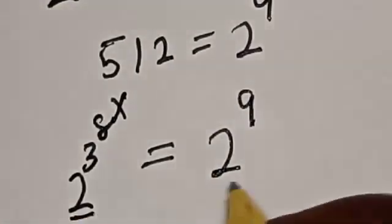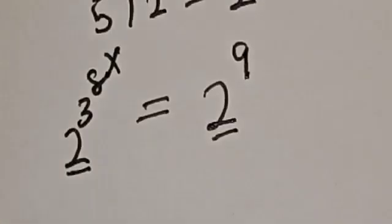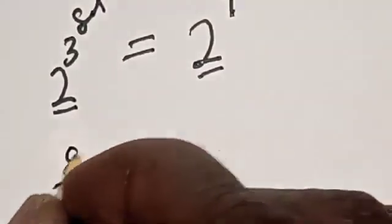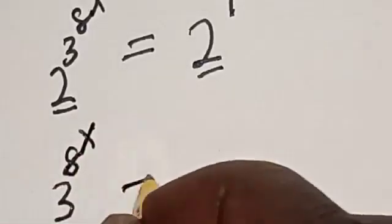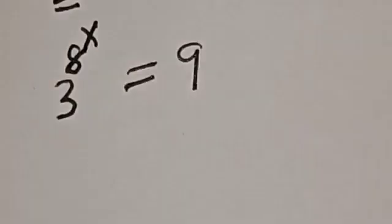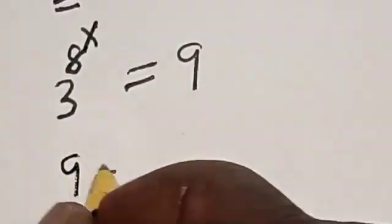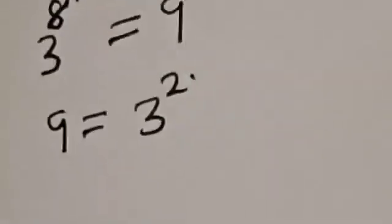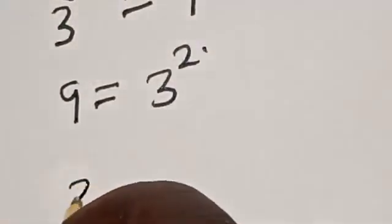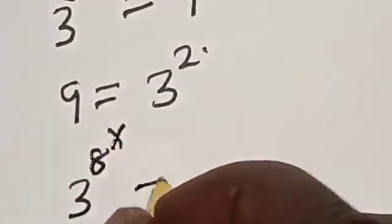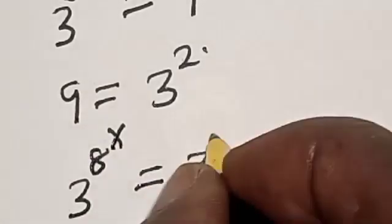They have the same base 2, so we work with the exponent. Then we have 3 raised to power 8 raised to power x is equal to 9. Also, 9 is equal to 3 squared, so 3 raised to power 8 raised to power x is equal to 3 squared.